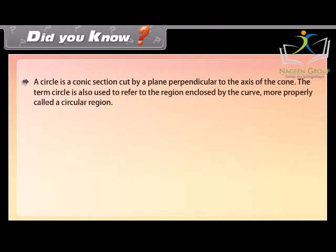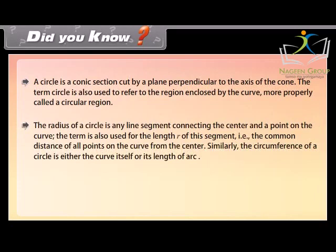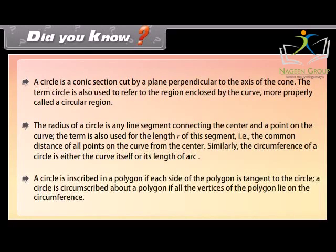Did you know? A circle is a conic section cut by a plane perpendicular to the axis of the cone. The term circle also refers to the region enclosed by the curve, more properly called a circular region. The radius is any line segment connecting the center to a point on the curve, and also the common distance of all points on the curve from the center. The circumference is either the curve itself or its length. A circle is inscribed in a polygon if each side is tangent to the circle, and circumscribed about a polygon if all vertices lie on the circumference.